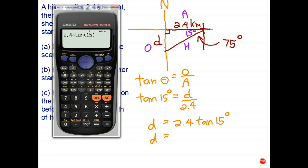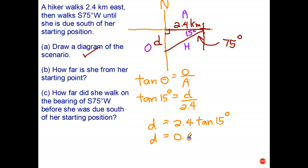What accuracy do we need? It doesn't say, so let's have a look at the answer and make a decision. Looks like probably two decimal places: 0.64 of a kilometer south of where she started from.